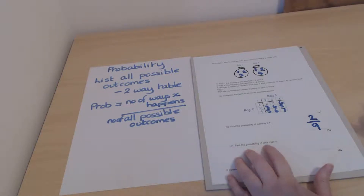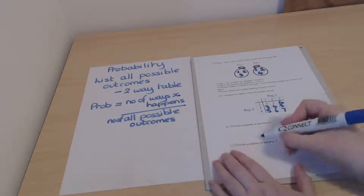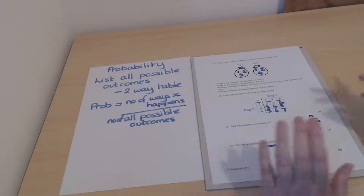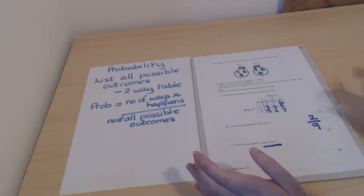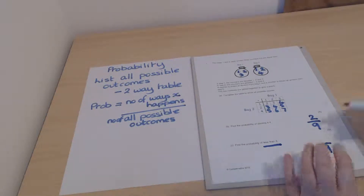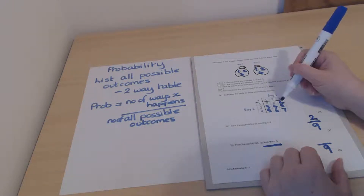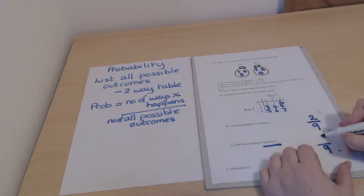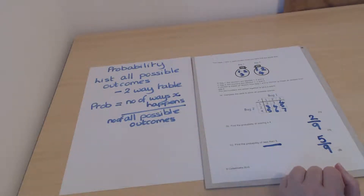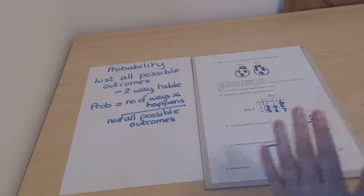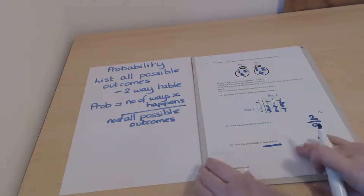The next question asks for the probability of getting less than 5. It's still out of 9 because there are still only 9 possible scores. Counting values less than 5 in the table, we get 1, 2, 3, 4, 5 — five different ways the score can be less than 5. We don't include the fives because it says less than, not less than or equal to. So the answer is 5 out of 9.